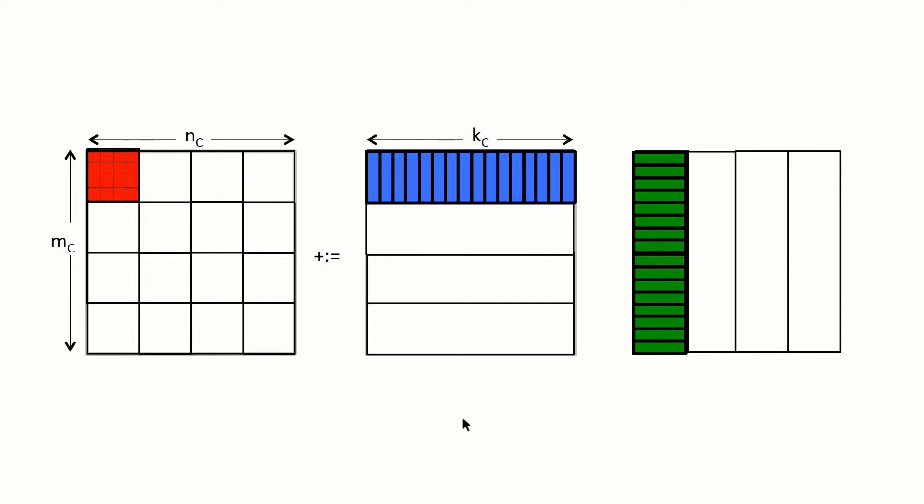And we're now going to carefully look at what computations are being done with the micro tiles of C and the micro panels of A and B, and keep an eye on how they are reused in subsequent computation.